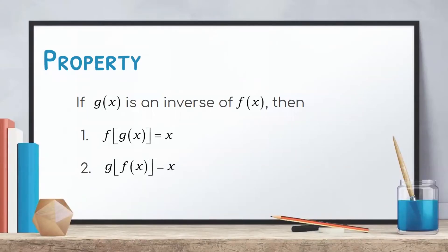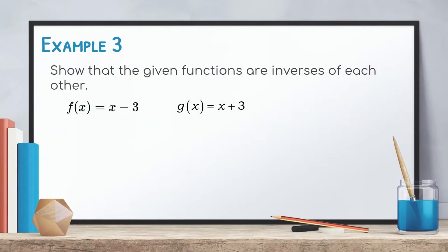Note that given a function and its inverse, the following property is applicable: if g of x is an inverse of f of x, then f of g of x is equal to x and g of f of x is equal to x. Meaning, the compositions of a function and its inverse both equal x. We can use this property to verify if two functions are inverses of each other. For example, show that f of x equals x minus 3 and g of x equals x plus 3 are inverses of each other.